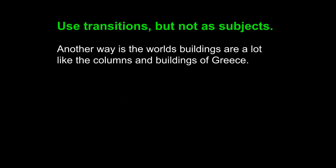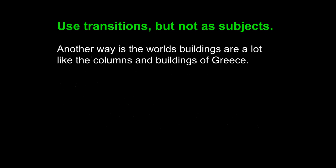'Another way is the world's buildings are a lot like the columns and buildings of Greece' can be revised to: 'Also, it gave later civilizations ideas of how to design buildings with the columns of the Greeks.' 'Also' is the transition word, separate from the subject with a comma. 'It' is a pronoun replacing 'Greek art and architecture,' making it a strong subject because it replaces a strong noun phrase. The sentence clearly indicates the idea.